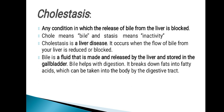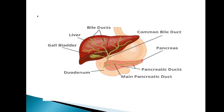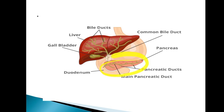Bile is a fluid that is made and released by the liver and stored in the gallbladder. Bile helps with digestion — it breaks down fats into fatty acids which can be taken into the body by the small intestine. The liver has branches known as bile ducts. Bile is stored temporarily in the gallbladder, then secreted through the common bile duct into the duodenum. The pancreas secretes pancreatic juice, and both bile and pancreatic juice are involved in digestion.